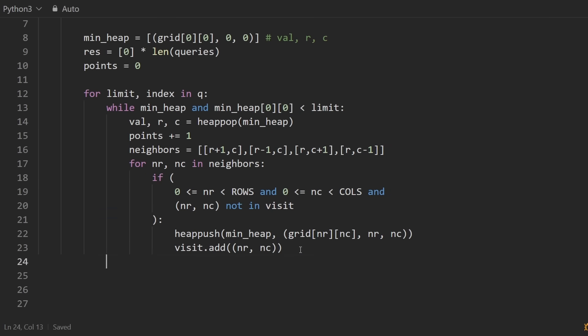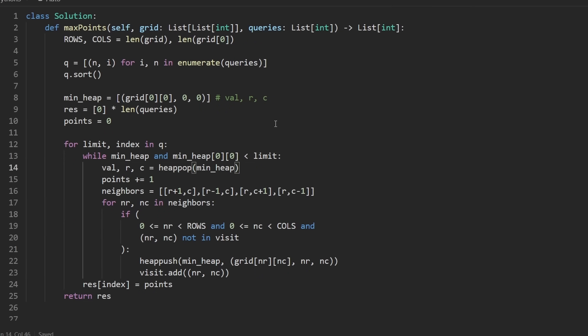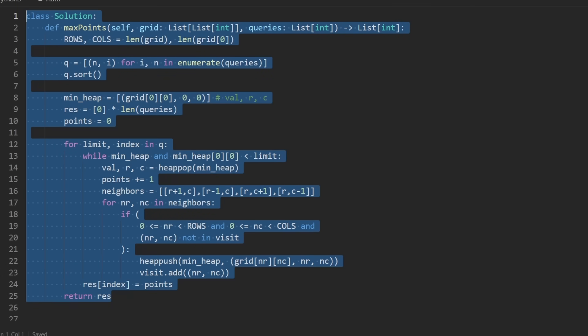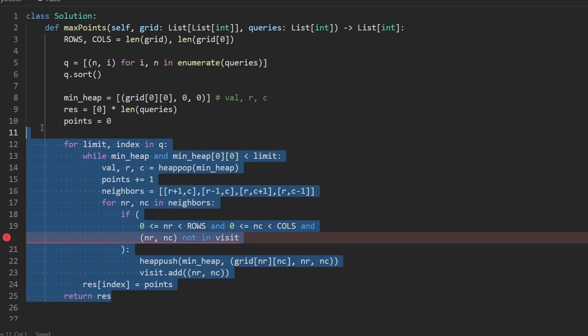And then maybe while the heap is not empty and there are still values in there that are less than the limit, we'll continue to process them. When we're done processing all of them, we will just say that in the result array, don't append to it. But for the specific index of the query over here, we're going to set the number of points. And then at the end we can go ahead and return the result. So you can take a look at the entire code here. I don't think there's anything crazy going on here. So this is a really solid problem just to kind of practice the fundamentals. Oh whoops. I can't believe I forgot to initialize my visit hash set.